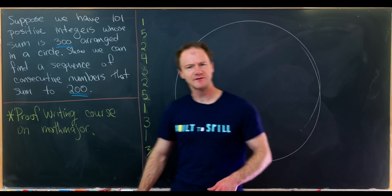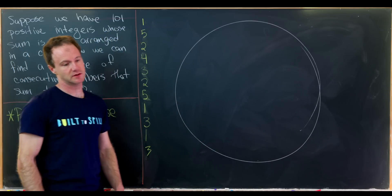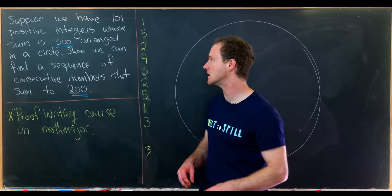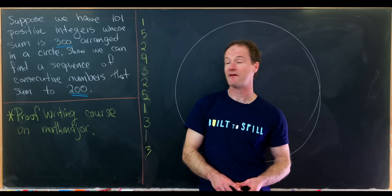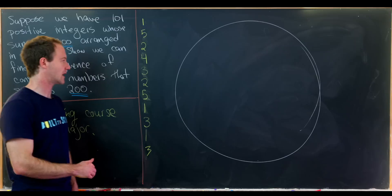Okay, so I've started over here with a smaller example. So it's kind of an interesting prospect of figuring out what a smaller example might be. But in this case we can replace 101 with 11, 300 with 30, and 200 with 20 and that'll work out.